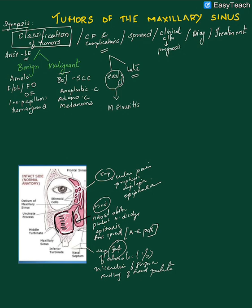If the tumor spreads anteriorly, it involves the facial skin and related structures, presenting as a large swelling in the cheek, invasion of the facial skin, and extraoral ulcerations. Squamous cell carcinoma or anaplastic carcinoma invading the anterior wall can present as swelling and ulceration of the chin area.